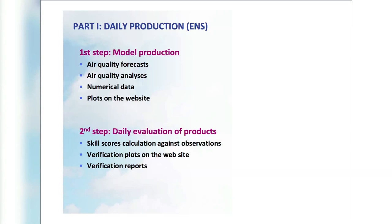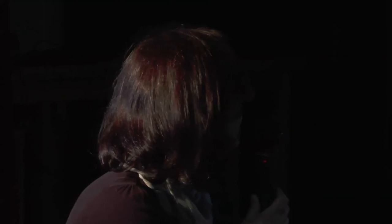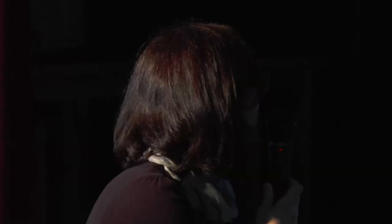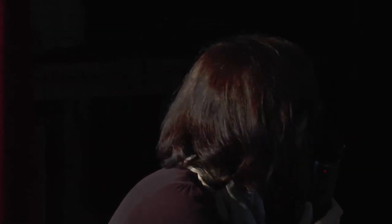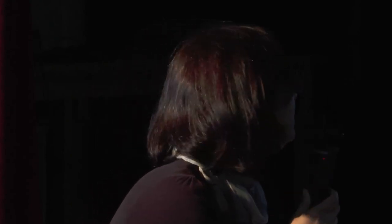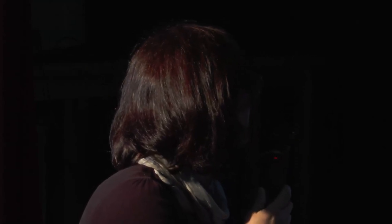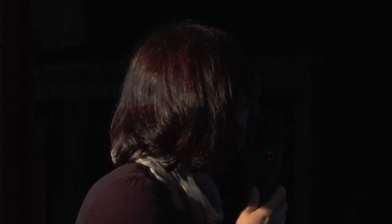There are two main steps in the daily production: the model production itself, and the daily evaluation of these products, which is equally important. All models use the same meteorological forcing from the ECMWF operational model, the same emission data set, and the same lateral boundary conditions for chemistry species from the global Mozart production. For the forecast we use only this, but for the analysis we also combine with observations — the same surface measurements of pollutants used across the different models, and additionally some models use satellite data.